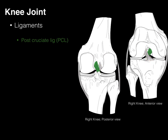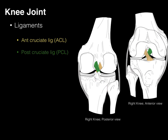We also have the posterior cruciate ligament that arises from the posterior part of the tibia and inserts more ventrally on the femur. The cruciates get their names from the part of the tibia they arise from. The ACL arises from the front of the tibia, the PCL arises from the back of the tibia, and if we put them both together, they make a cross — hence the name cruciate, which means cross.